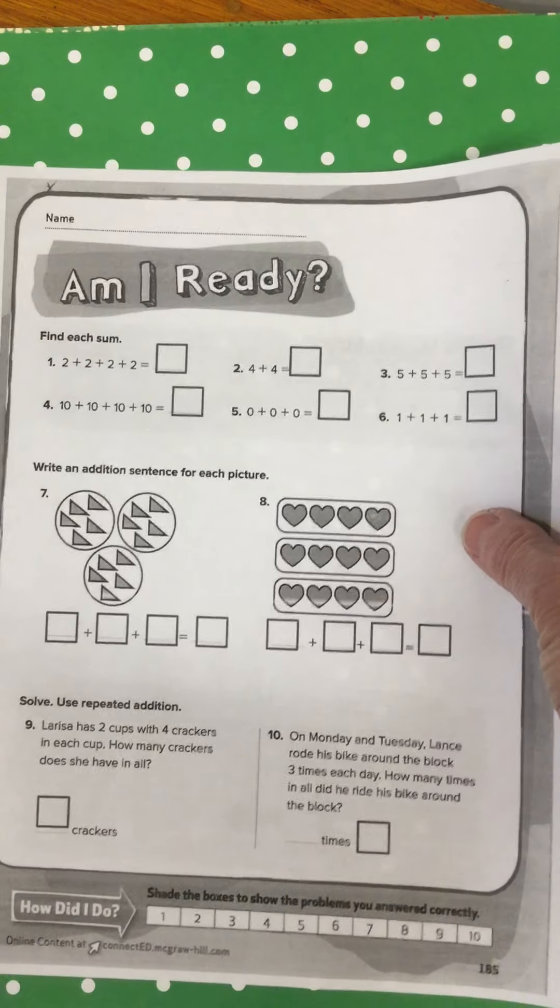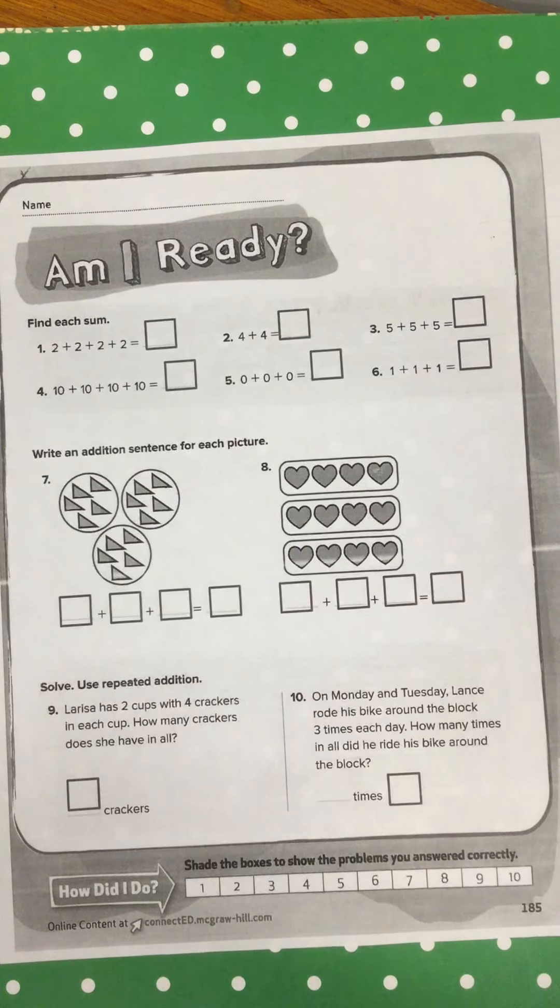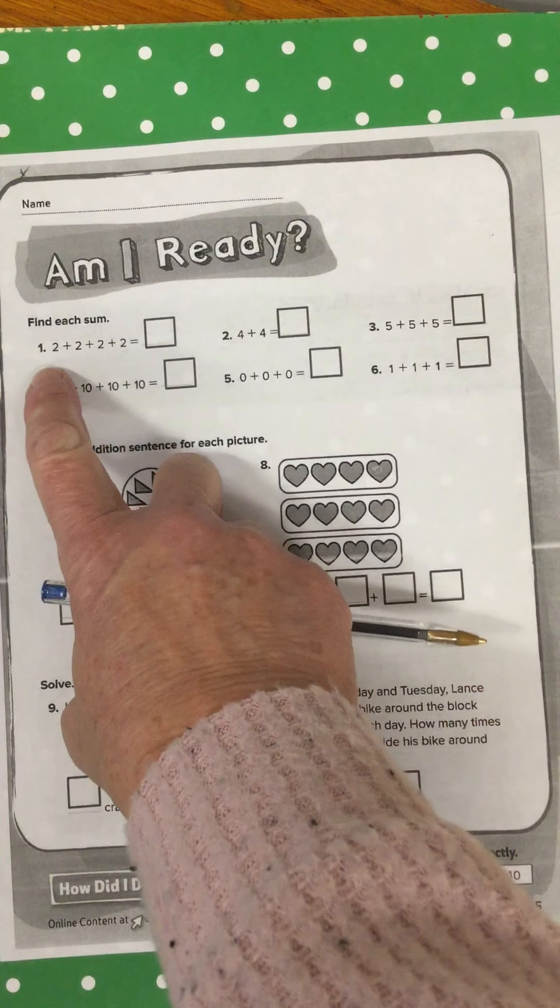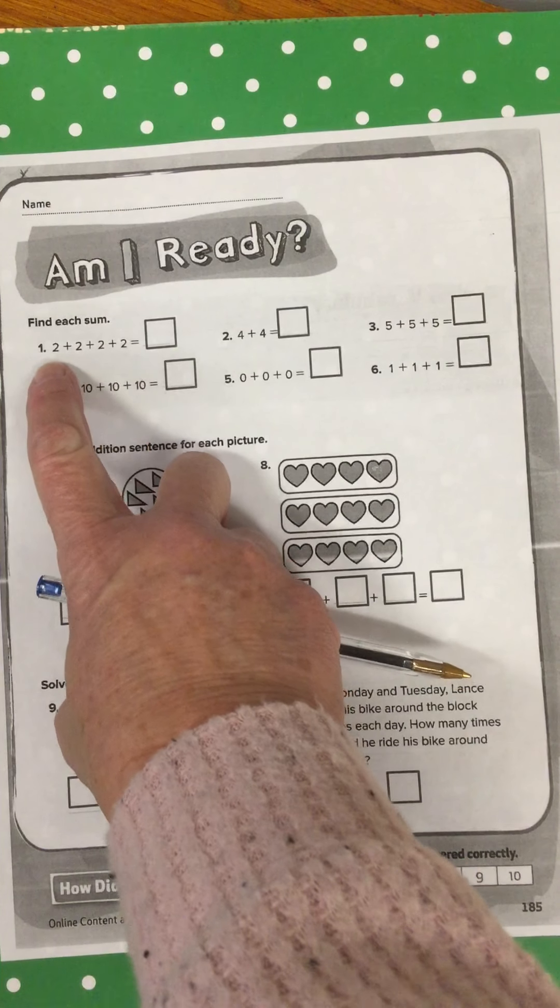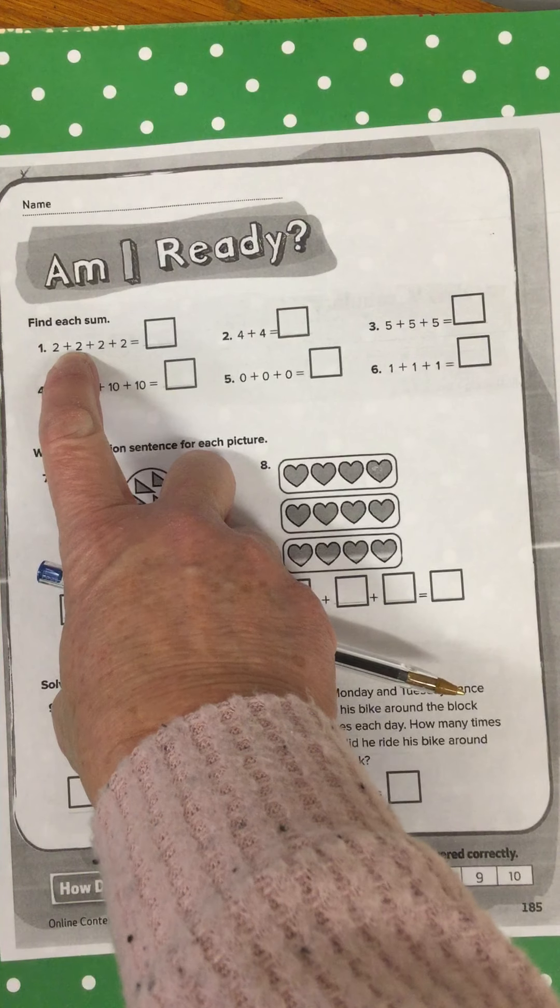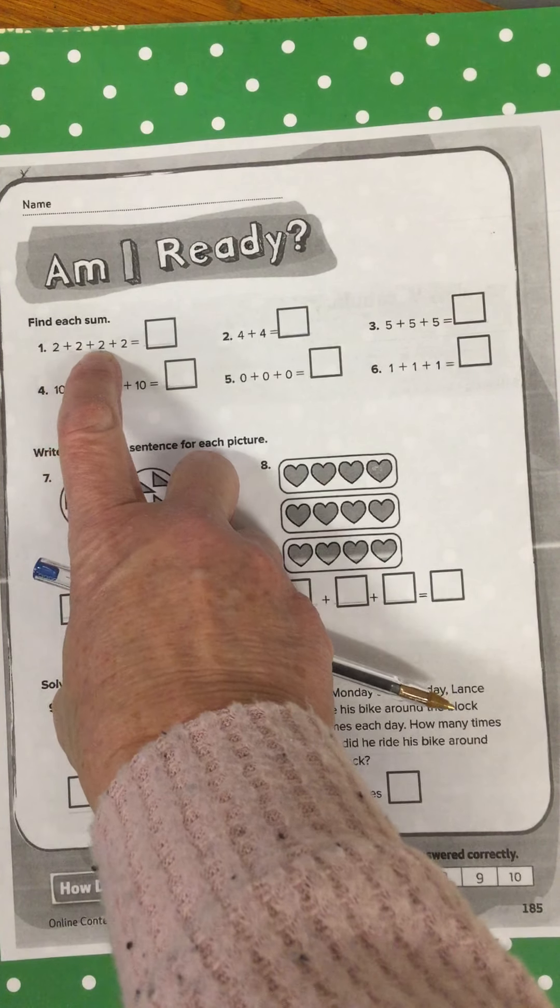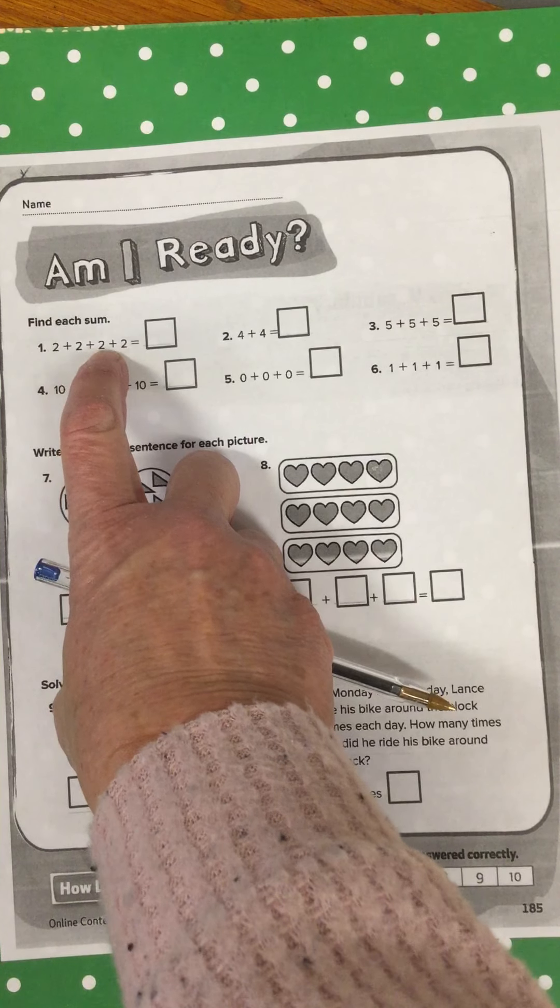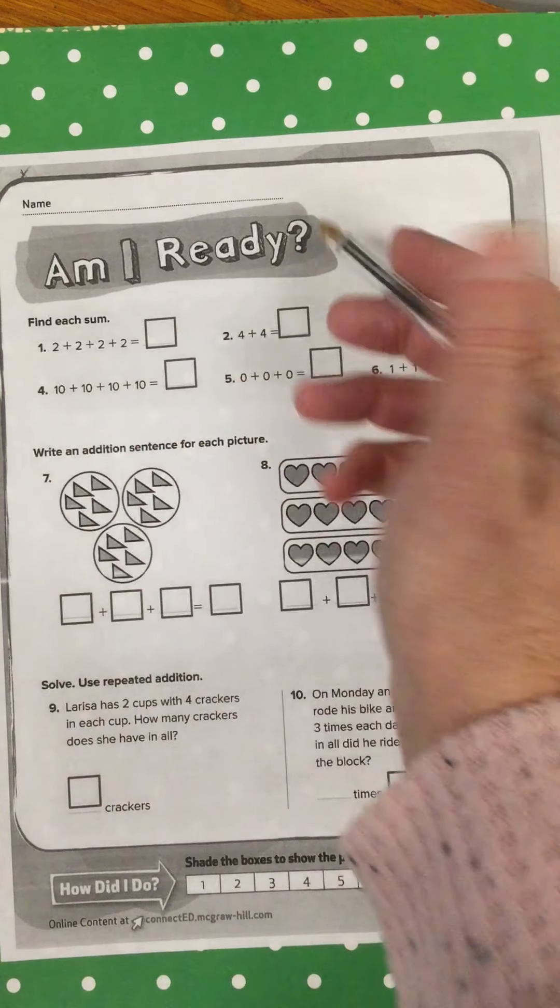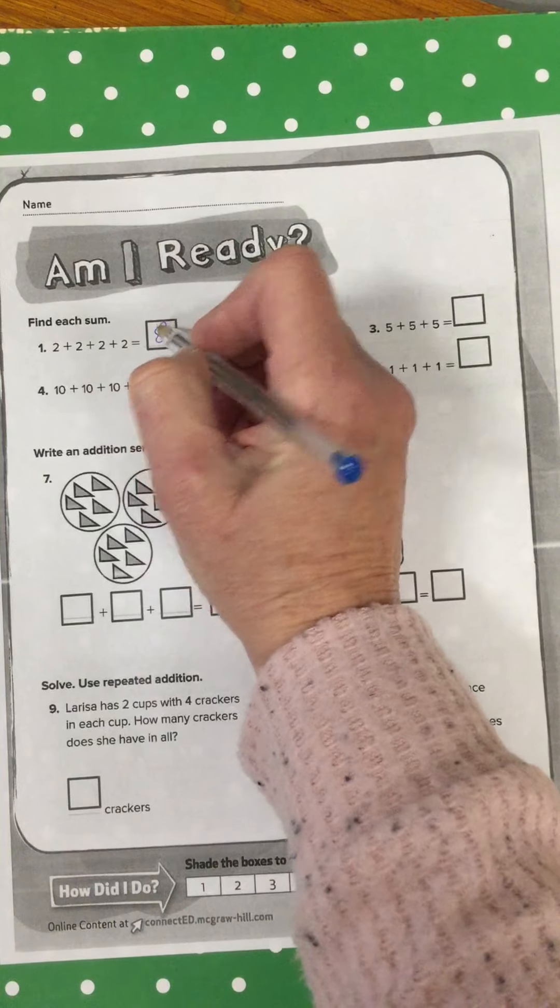So today, what you will see is, am I ready? And if you look at it, it's really just repeated addition. So 2 plus 2 plus 2 plus 2. So 2 plus 2 more, 4. 4 plus 2 more, 6. And 6 plus 2 more is 8. That's that skip counting that you've been doing forever.